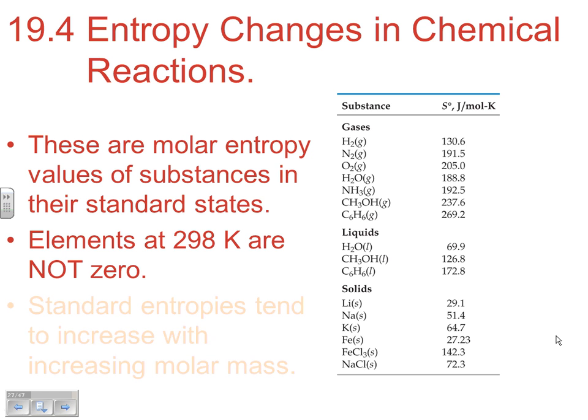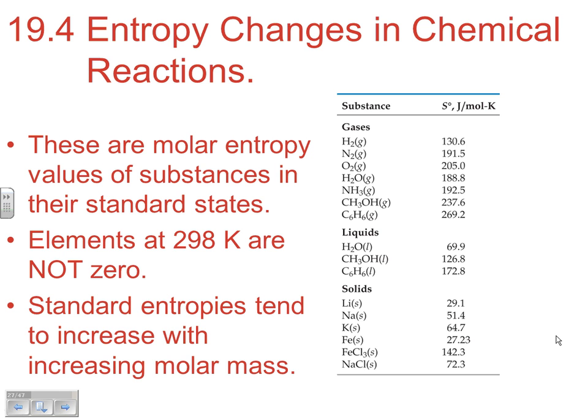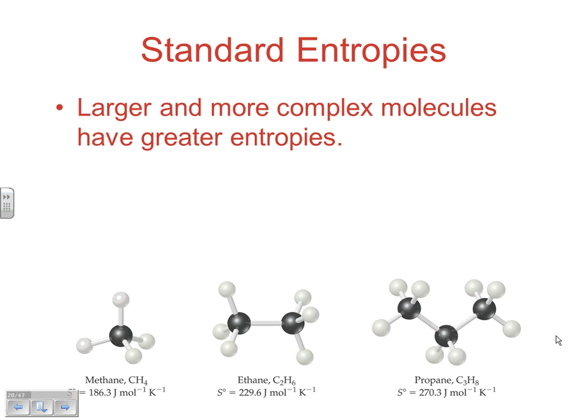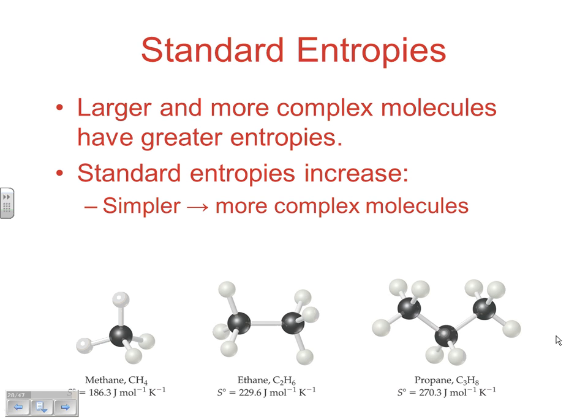You will see a trend that appears: the standard entropies tend to increase with increasing molar mass. As a general rule, larger, more complex molecules have greater entropies. Standard entropies increase when the substance is a more complex molecule, and when you go from a smaller molecule to a larger molecule.